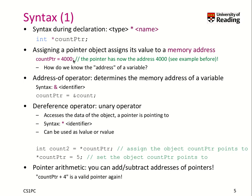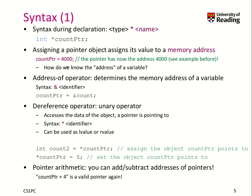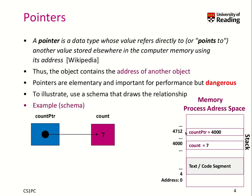When you assign a pointer object, you assign a memory address as its value. You could give any memory address you like — for example, address 4000, which in our example was the right value to point to the count object. But this is really difficult because memory addresses change every time you run your program. So how do we know the address of a variable? There is the address-of operator, which lets you determine the memory address of a variable. You use it on an identifier — it is the ampersand symbol. So count_ptr can be set to the memory address of the variable count using the address-of operator.